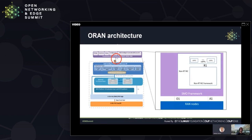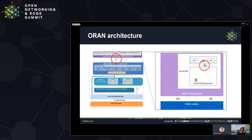ORAN has recently started to outline the internal structure of the SMO framework. Inside it we find the non-real-time RIC, which is also split into two parts: one framework or platform part, and one part containing the intelligence that addresses automation use cases in the RAN domain. Within this split, ORAN is defining an R1 API that will allow the split between platform functionality and the intelligence — which ORAN calls R-apps.